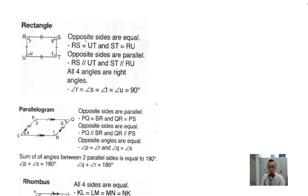For a rectangle, the opposite sides are equal. So RS equals UT, and ST equals RU. If one side is 5 cm, the opposite side is also 5 cm. If another side is 2 cm, the opposite side is also 2 cm. Opposite sides are parallel as well, and all four angles are right angles — all 90 degrees.